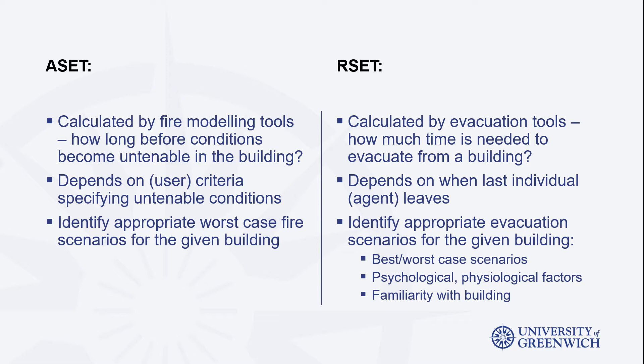Once this analysis is conducted, the engineer can then move on to calculate the required safe egress time, or RSET. This is typically conducted using an evacuation simulation tool, and the answer would equate to the time needed for the population to leave a structure. The answer is dependent on the time that the last agent leaves the structure. An example of such a model is Building Exodus, an agent-based evacuation simulation model developed by the fire safety engineering group.